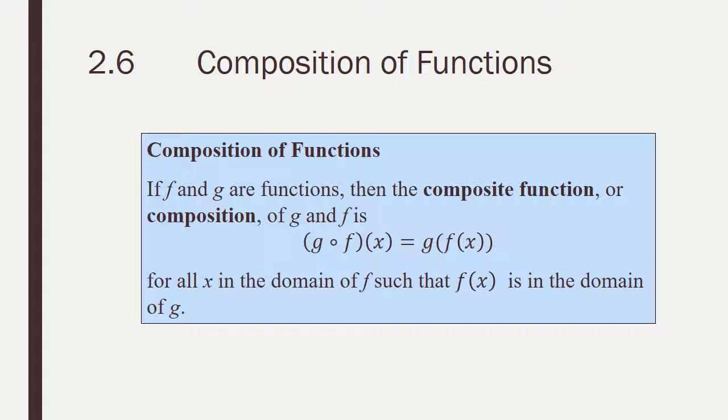And the last thing we're going to talk about in this section is the composition of functions. If f and g are functions, then the composite function or composition of g and f is g of f of x. The little o represents of. Or another way of writing it is g and then f would be in the parentheses and then x all the way on the inside. And this is true for all x in the domain of f such that f of x is in the domain of g.